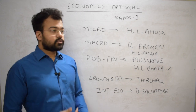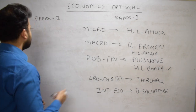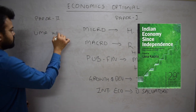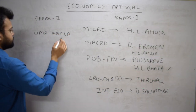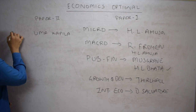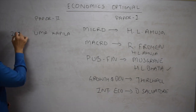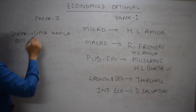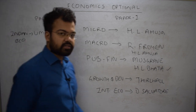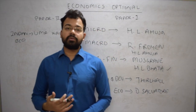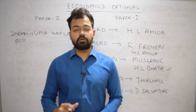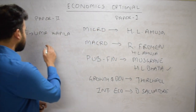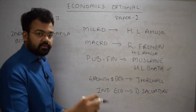For Paper 2 there is no single perfect book, but I would recommend Uma Kapila for Indian economy — specifically 'Indian Economy Since Independence.' It is a thick book of around 1000 pages. You must read Uma Kapila — it is very vital for Paper 2 preparation.